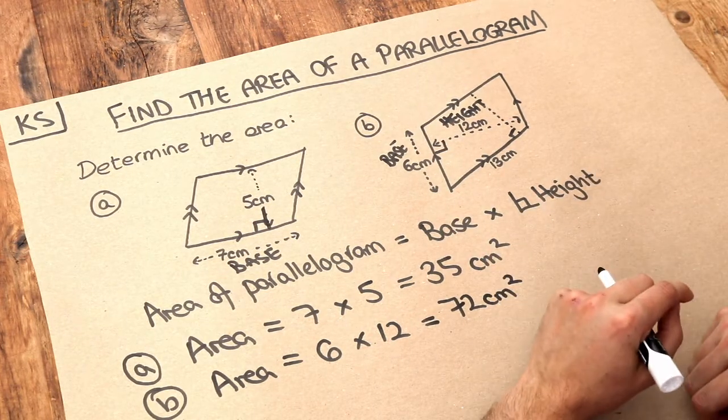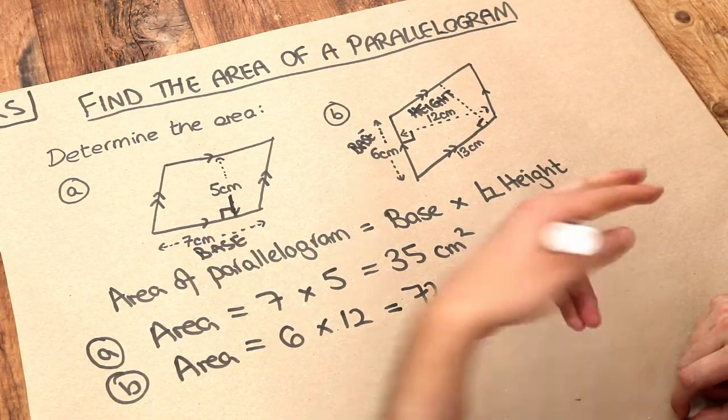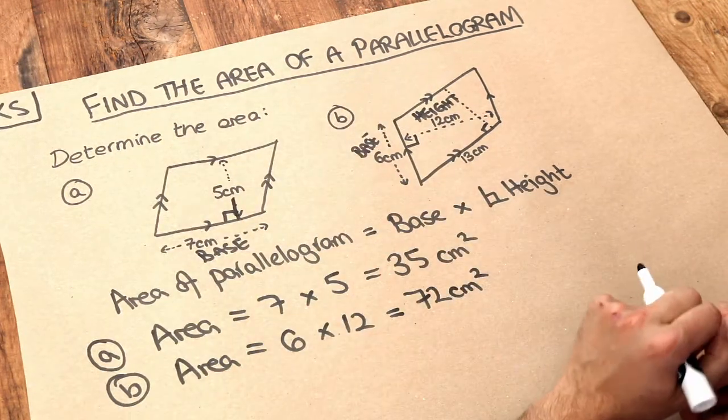A common mistake that students make is that they confuse this with the area of a triangle. So they do half times base times height, which is what you would do with a triangle. Whereas because these are parallelograms, we don't do that half.